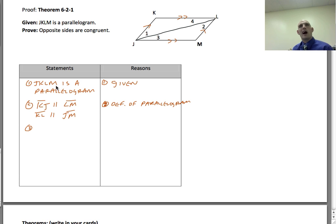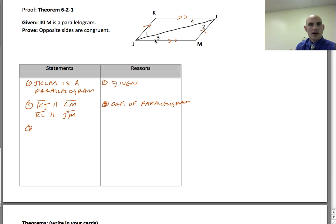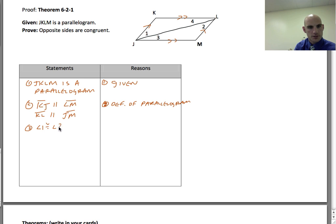I'm using the definition of different things I know and going logically toward proving that opposite sides are congruent. In the diagram, angles are marked, and having parallel lines helps me talk about those angles. I can say that angle 1 is congruent to angle 2, and angle 3 is congruent to angle 4, because they are alternate interior angles.